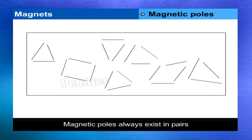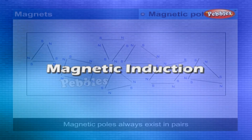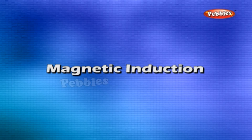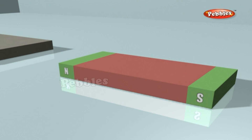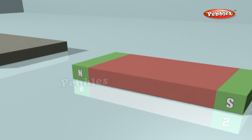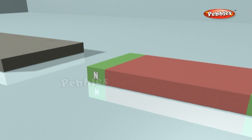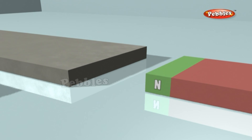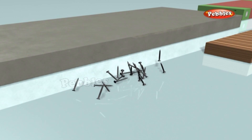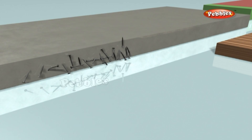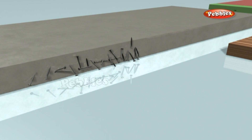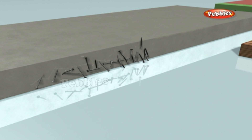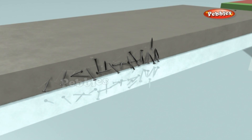The phenomenon by which an ordinary piece of iron acquires magnetic properties temporarily due to the presence of another magnet near it is called magnetic induction.